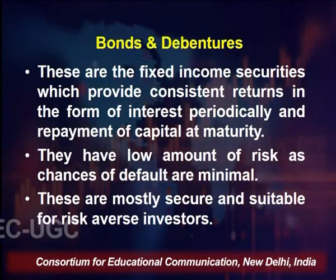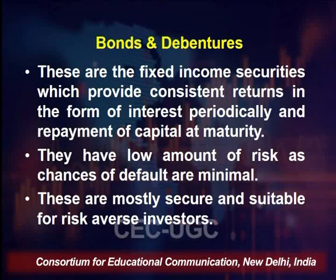Bonds represent a fixed liability on the company and a fixed return for the investor. Normally, the return on bonds is more than the return on a bank FD or post office deposits, because if the company also offered only 6–7% like the bank, people would just keep money in the bank. So certainly the rate of return in bonds or debentures is higher compared to other fixed income securities like bank FD, post office deposits, or National Savings Certificates.